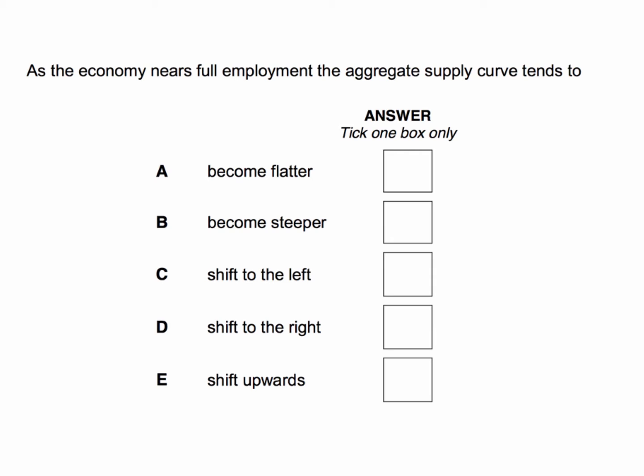This is all about the Keynesian aggregate supply curve. What happens as the economy reaches its full employment level of output? Does it become flatter? No, the answer is not flatter. Aggregate supply will be flat when the economy is at low capacity utilization — when the economy is coming out of recession.